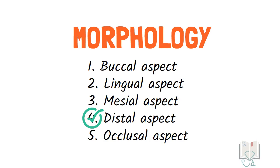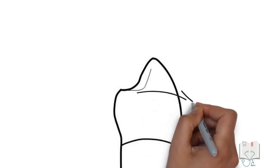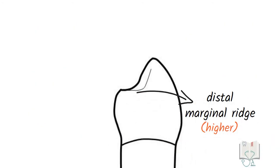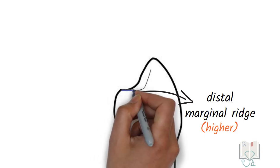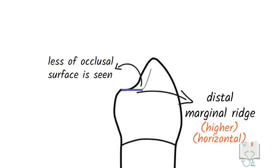From the distal aspect, the outline features are the same as the mesial aspect, though some differences exist. The distal marginal ridge is at a higher level than the mesial marginal ridge, and it is not slanting but more horizontal, due to which less of the occlusal surface is seen from the distal aspect. Unlike the mesial aspect, no developmental groove is present on the distal side.